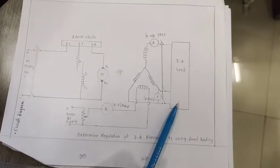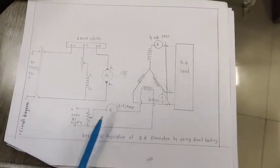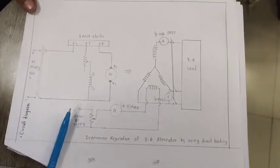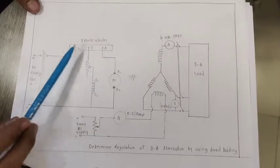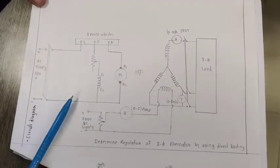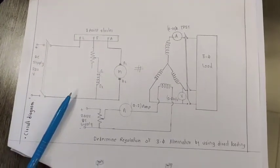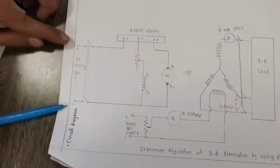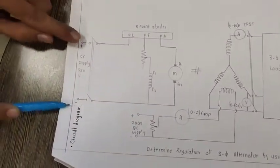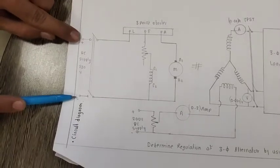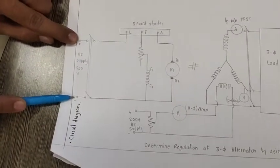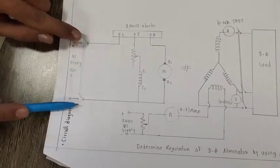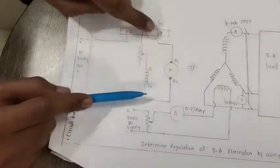Initially we are going to start with the resistive load. Let us see the connections first for the prime motor — this is the DC shunt motor. You can see here this is the supply connected to the DC machine.